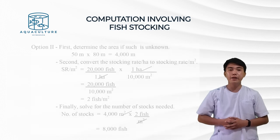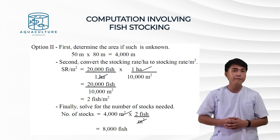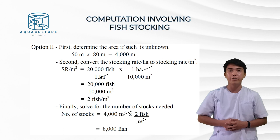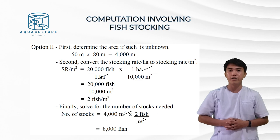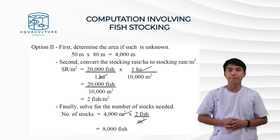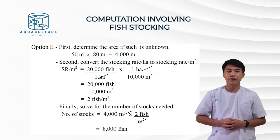For Option 2, first determine the area: 4,000 m² from 50 meters times 80 meters. Second, convert the stocking rate per hectare to stocking rate per square meter: 20,000 fish over 1 hectare times 1 hectare over 10,000 m² equals 2 fish per square meter. Finally, number of stocks equals 4,000 m² times 2 fish per m² equals 8,000 fish.